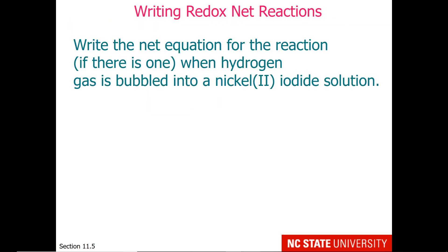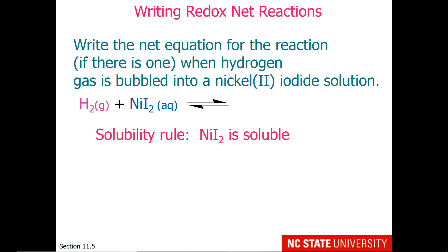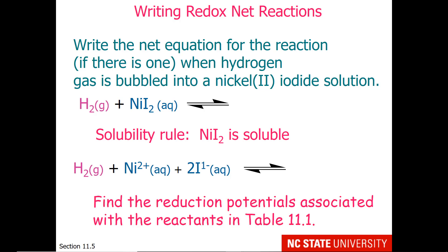Here's our question: write the net equation for the reaction, if there is one, when hydrogen gas is bubbled into a nickel-2-iodide solution. In chemistry terms, we have hydrogen gas dissolved in water and nickel-2-iodide, which dissolves. So we have essentially hydrogen, nickel-2+, and iodide-1- floating about in solution. Our first job is to find the reduction potentials associated with the reactants.